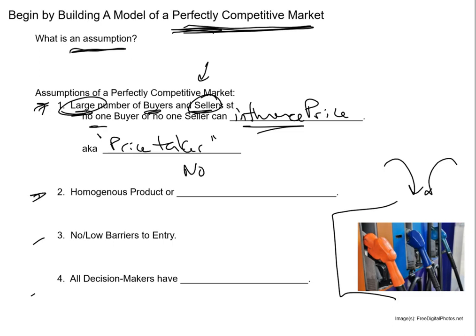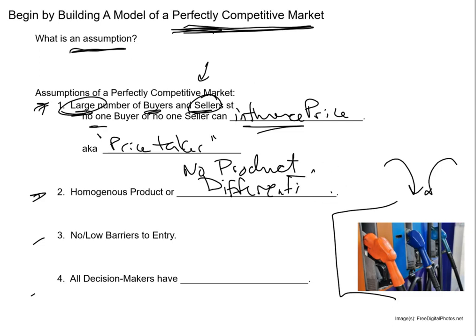The second assumption is homogeneous product — no product differentiation. Product differentiation has two parts: first, consumers have to believe there is a difference between goods, whether real or not. For example, with running shoes, name-brand shoes versus generic athletic shoes — there is a real quality difference that consumers believe in. That's a real difference in those goods.